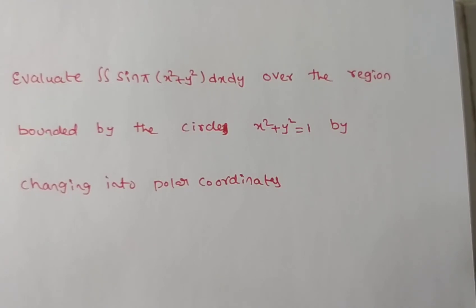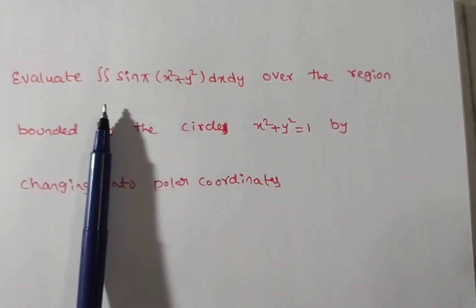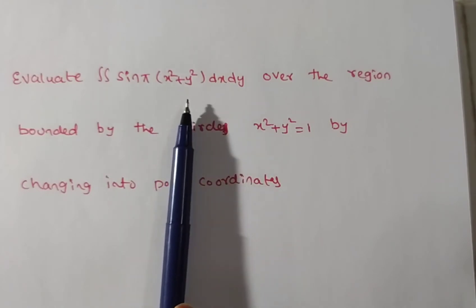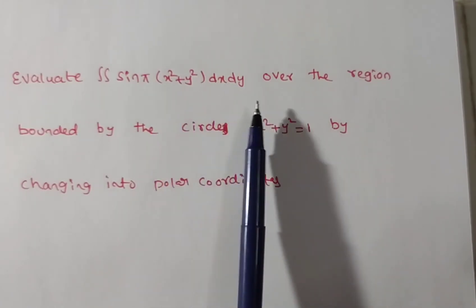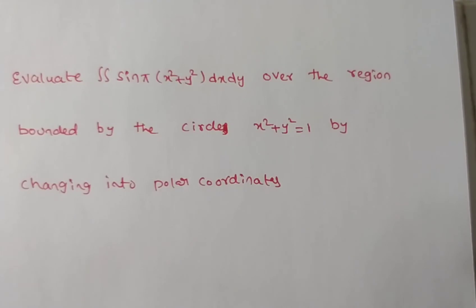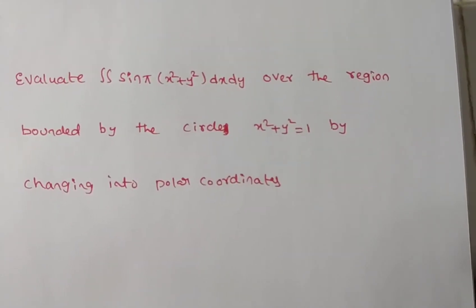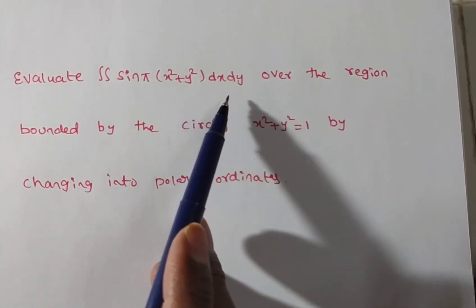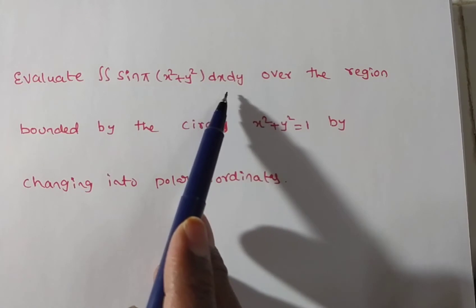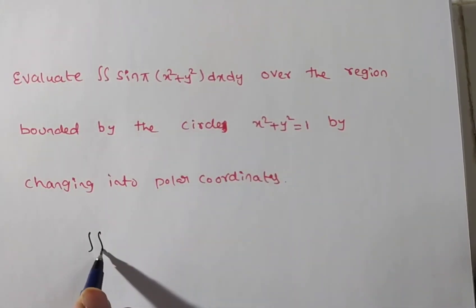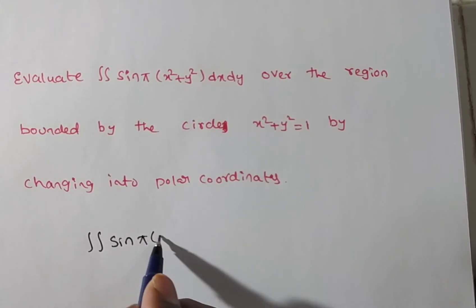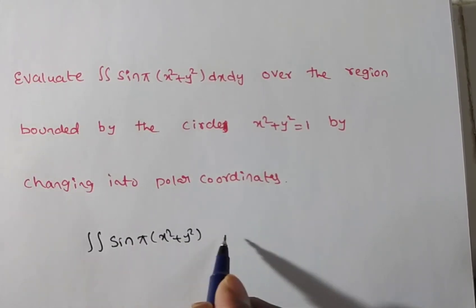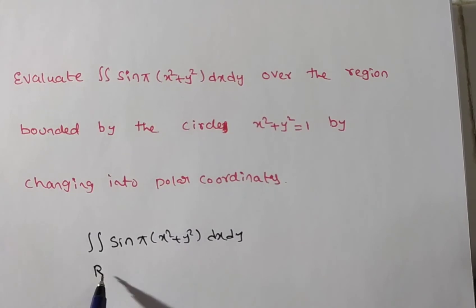In this video we are solving a problem on multiple integrals. The given problem is to evaluate the double integral of sine(π(x² + y²)) dx dy over the region bounded by the circle x² + y² = 1, by changing into polar coordinates. The given problem is in the x-y plane, so we write: integral of sin(π(x² + y²)) dx dy where R is the region bounded by the circle x² + y² = 1.